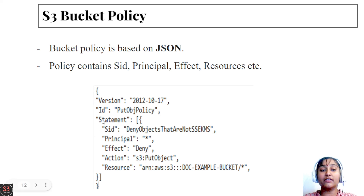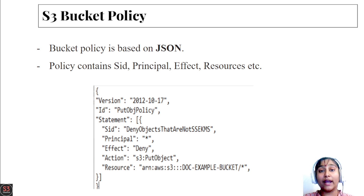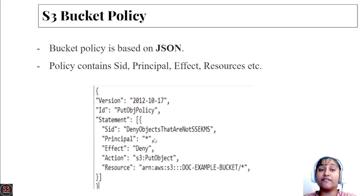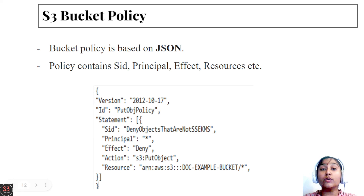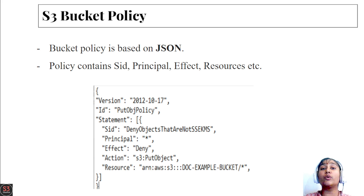In the statement block, we have the policy ID, then the principal parameter. In the principal parameter, we define which users we want to allow access to our bucket — we can specify a username, or use a star (*) to allow every user. Next is the effect parameter, where you use either 'Allow' or 'Deny'. If you want to allow access, use 'Allow'; to deny access, use 'Deny'.